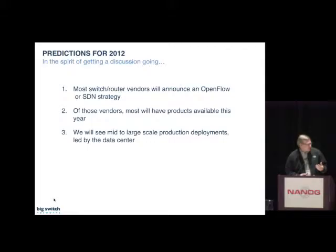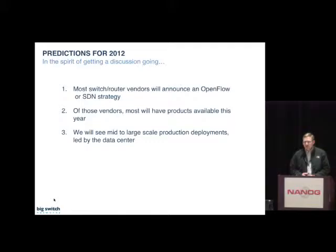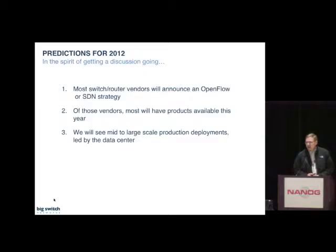In terms of predictions for 2012: I think most switch and router hardware vendors will announce an OpenFlow or at least SDN strategy of some type. Of those vendors, I think the majority will actually have devices generally available in the market. And we'll also see a fair number of mid-to-large-scale deployments that become public, primarily led initially by data center deployments, but then going beyond that.